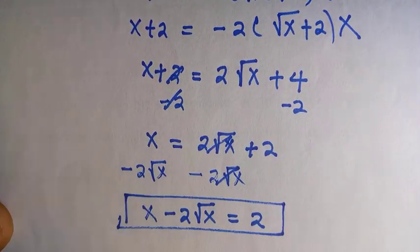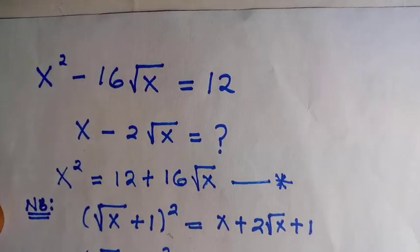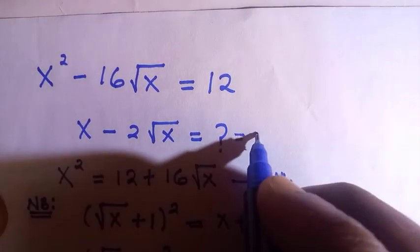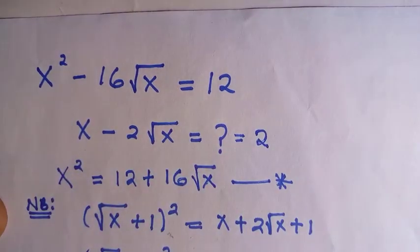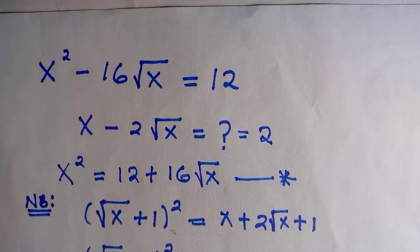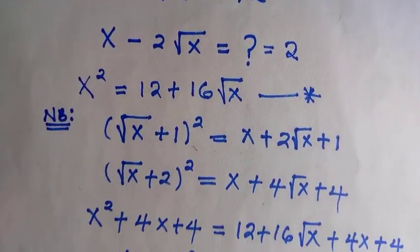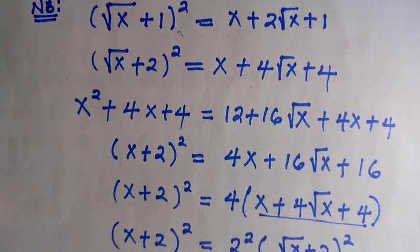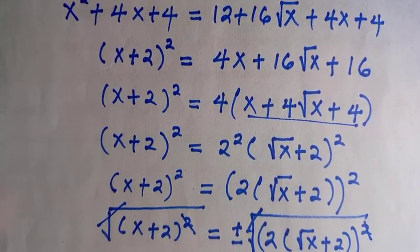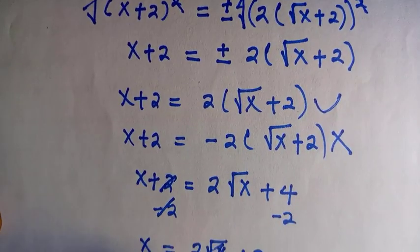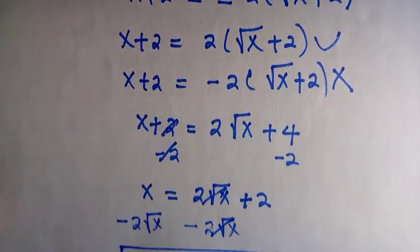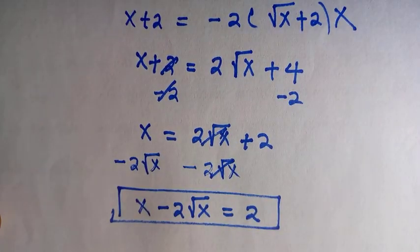So with all this work, we finally got 2. This is how to solve this problem. Therefore, x - 2√x equals 2. This is how the problem should be solved. I hope you learned something today. Thanks for watching. Don't forget the steps I used. Subscribe to this channel and like this video. Never stop learning.